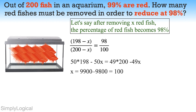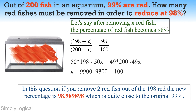Especially if the numerator and denominator are large compared to the small amount subtracted from both. In this question, if you remove two red fish out of the 198 red, the new percentage is 98.9898%, which is quite close to the original 99%. In fact, when a small amount delta is subtracted from both numerator and denominator, the change in the value of the fraction is a small number. The fraction value decreases approximately by 0.005% when we decrease the number of red fish by 1. This rate of change can be calculated by differentiating the above equation, and this is another way to solve this question.